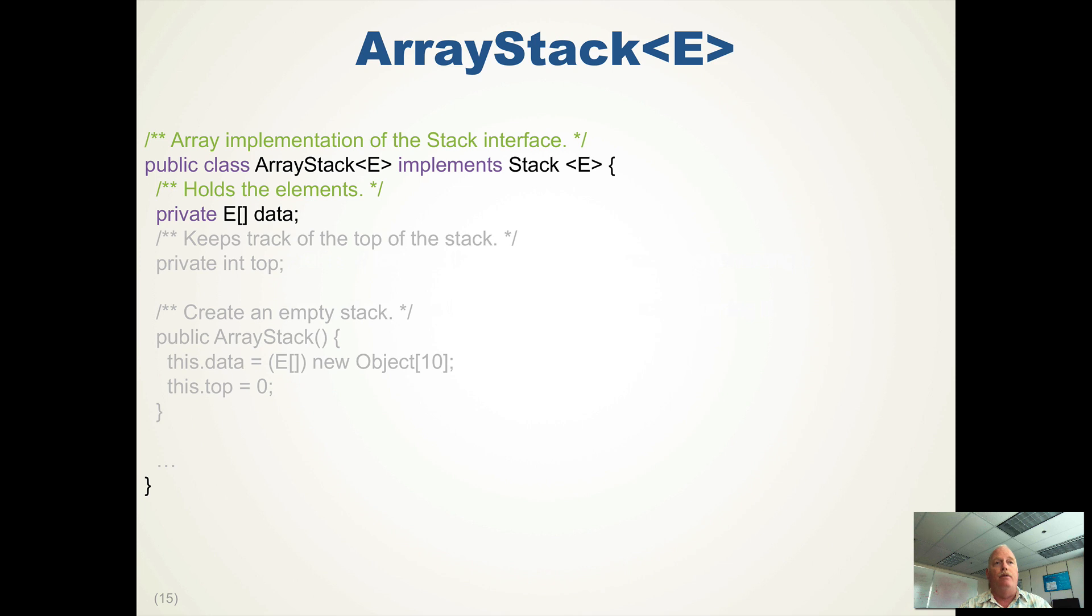Let's show you the implementation of the array stack. So we have our array data that holds the elements, and we have our int top, which is the index of the top of the stack. And you have a choice to either say that's the next empty place, or that is the top item of the stack. In my example, I'm going to use the next empty spot. So I create my array of E's, and then I indicate that the top is zero, saying that's the next spot that I'm going to stick things in.